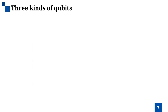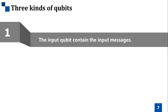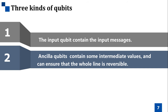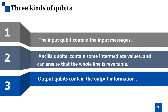A quantum algorithm consists of operations on qubits. We can divide the qubits into three types. First is the input qubit, which is written with the input message such as the input key or the input plaintext. The second is the ancillary qubit, written with some intermediate values. It ensures that the whole quantum circuit is reversible, and we should clean up the ancillary qubits at the end of a quantum circuit. The third is the output qubit, which contains the output information, and we do not need to clean it up. So we can try to apply the Toffoli gate to the output qubit instead of the ancillary qubit, which can reduce the number of Toffoli gates and the Toffoli depth.